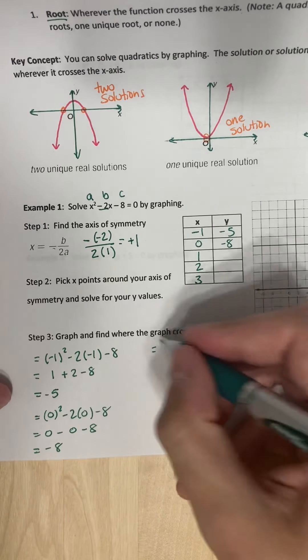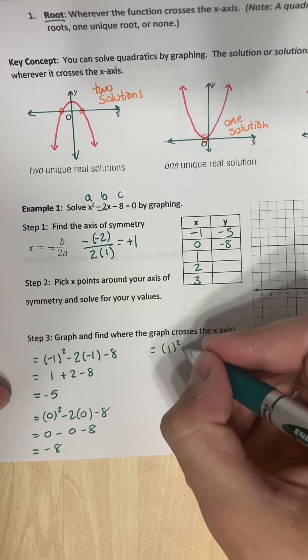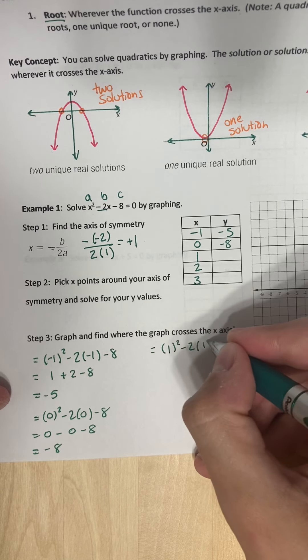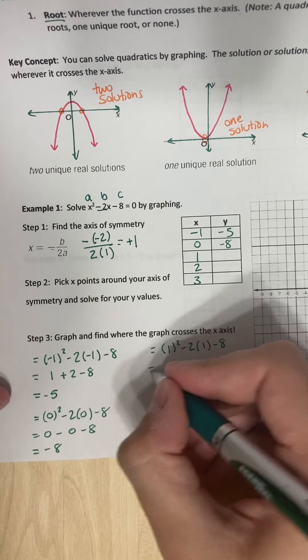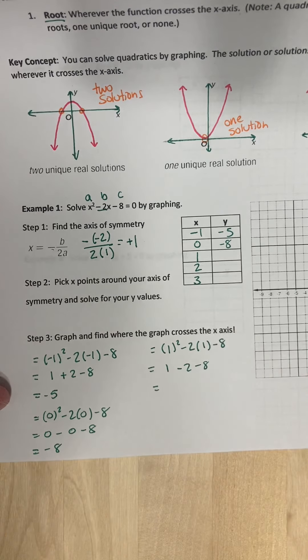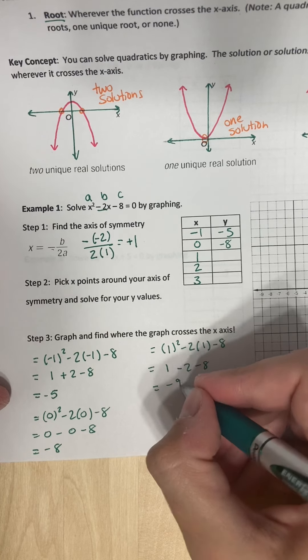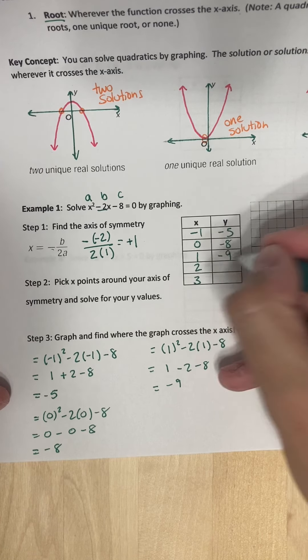Let's plug in our axis of symmetry at 1. I get 1 squared minus 2 times 1 minus 8. 1 minus 2 minus 8. And we get negative 9. So I'll plug in negative 9 here.